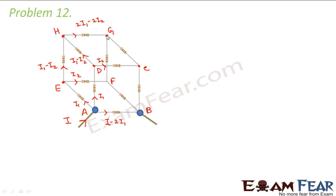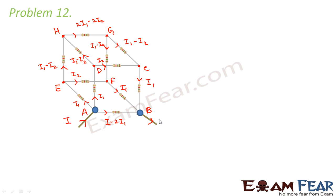Once 2i1 minus 2i2 reaches the next node it splits into two parts. Both paths cover two resistors, so they are equal — i1 minus i2 goes via one path and i1 minus i2 via the other. At the subsequent nodes, i1 minus i2 plus i2 adds up to i1 on each side. Finally, i1 from one branch, i1 from another, and i minus 2i1 from the third all add up to form i, confirming the current distribution is correct.